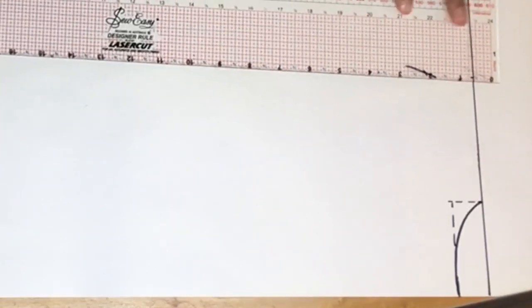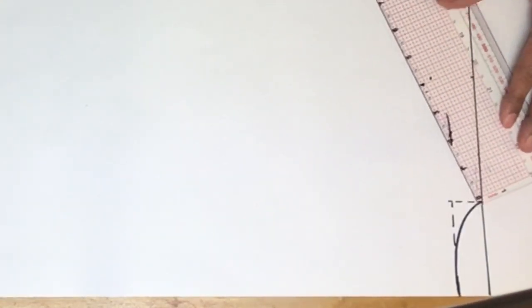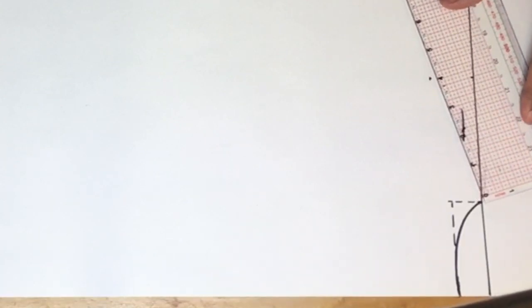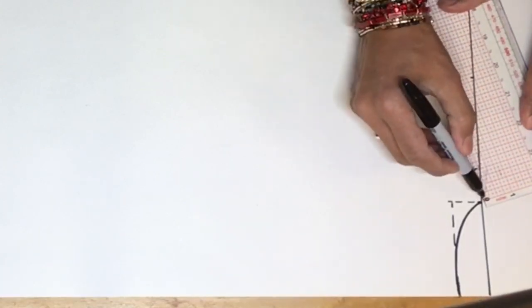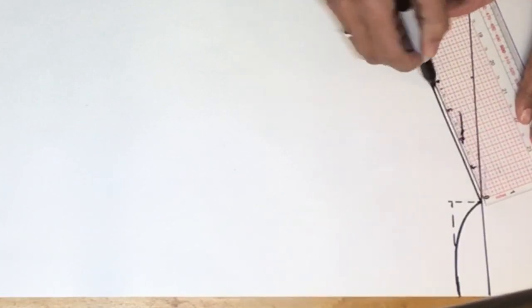So then we're going to do the shoulder. Now my shoulder is average and it drops. I'm going to drop it at four inches, so about four inches there. I'm going to drop it one and a half inches. Make it four inches long. And that takes me to about there.